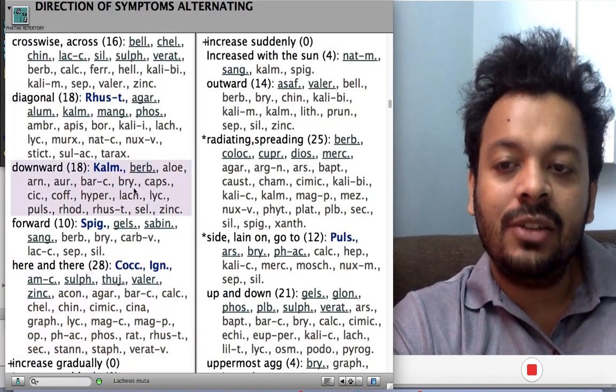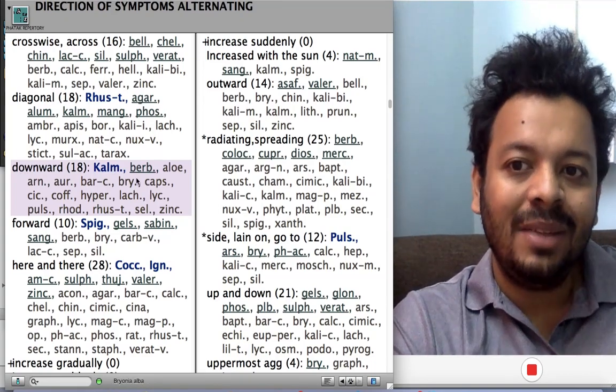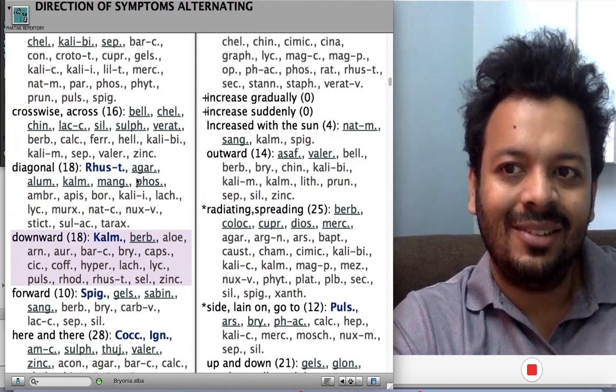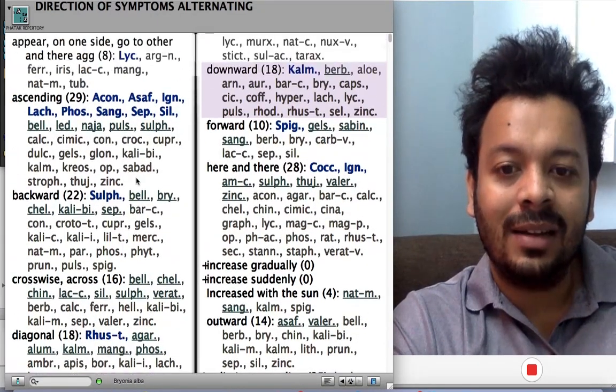Patient says he gets joint pain - it starts from up, goes down. Pain direction downwards: Kalmia and Berberis, very interesting. Many rubrics like that you will see here.